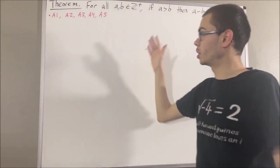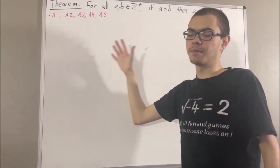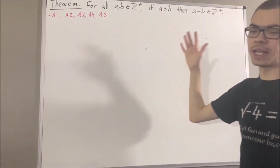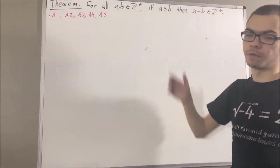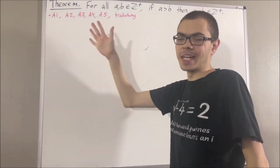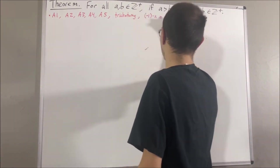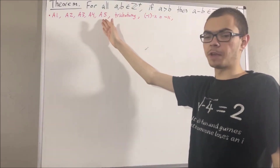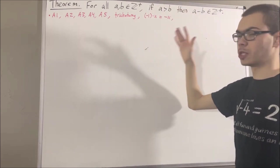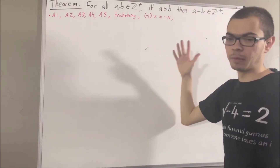Now, in regards to the ordering of the real numbers, we have proven the trichotomy law, which says for all real numbers a and b, we have a is greater than b, a equals b, or a is less than b, and exactly one of those is true. We've also proven for all real numbers x, negative 1 times x is equal to the negative of x. And also, using the concept of the negative of a real number, we defined the operation of subtraction so that for all real numbers a and b, a minus b is defined as a plus the negative of b.